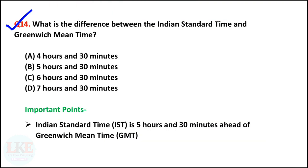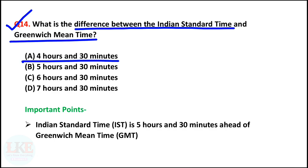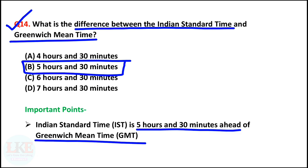Question number 14: what is the difference between Indian Standard Time and Greenwich Mean Time? Right answer option B: 5 hours and 30 minutes. Indian Standard Time is 5 hours and 30 minutes ahead of Greenwich Mean Time.